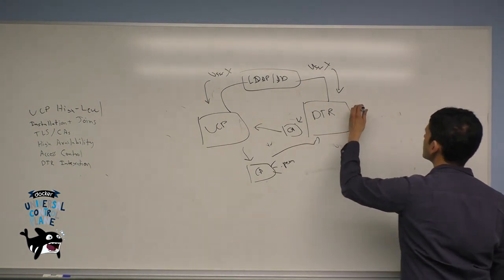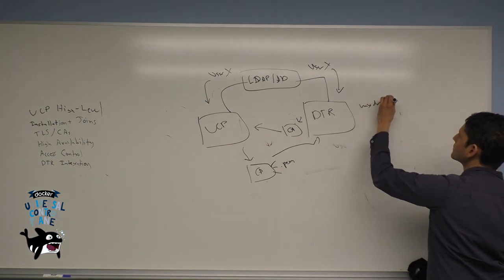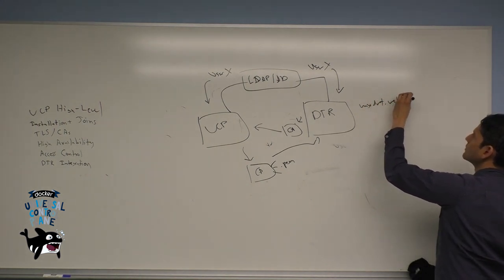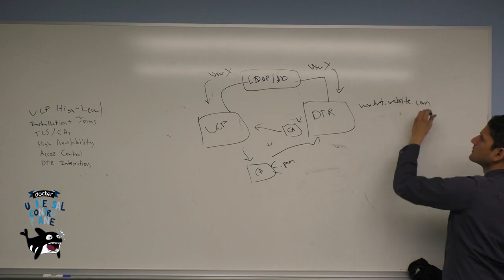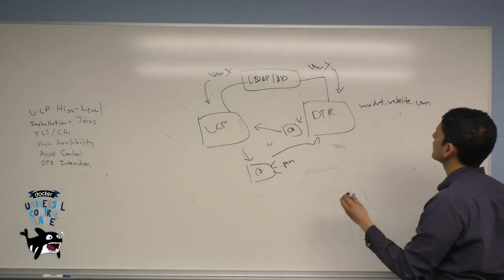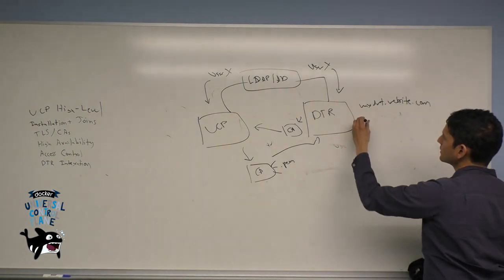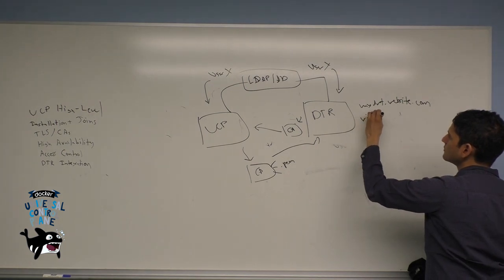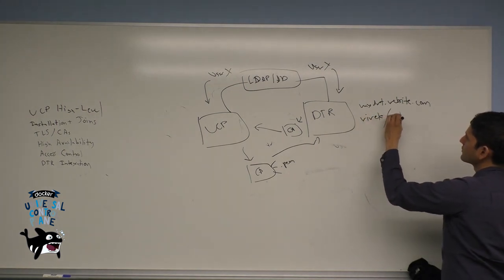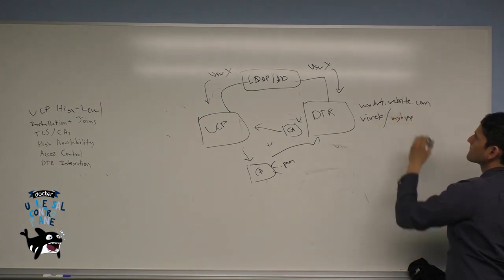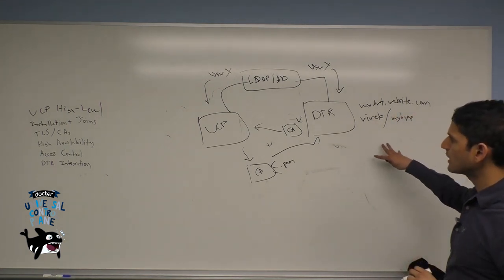Let's say this DTR's namespace is mydtr.website.com and I have my own private repository. We'll call that Vivek, and my own app container, my app.